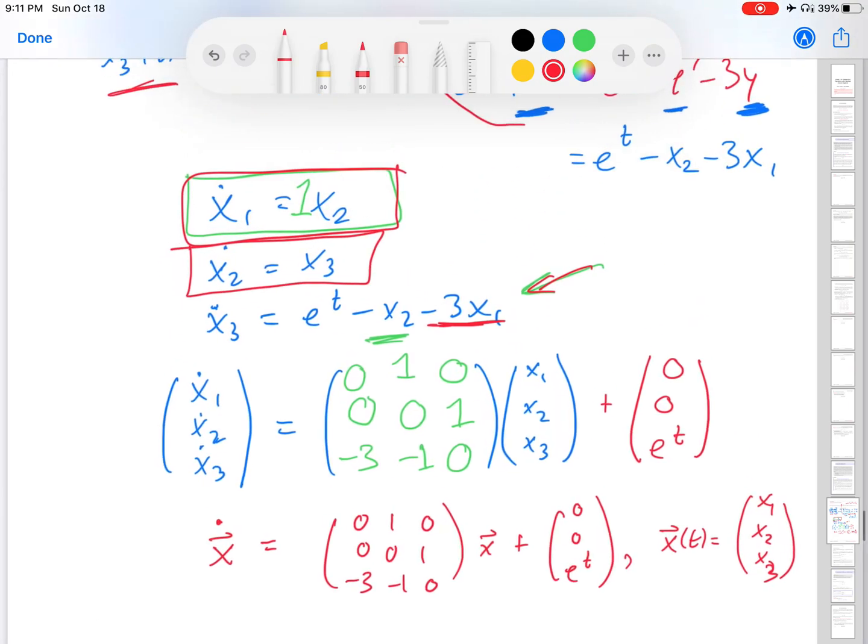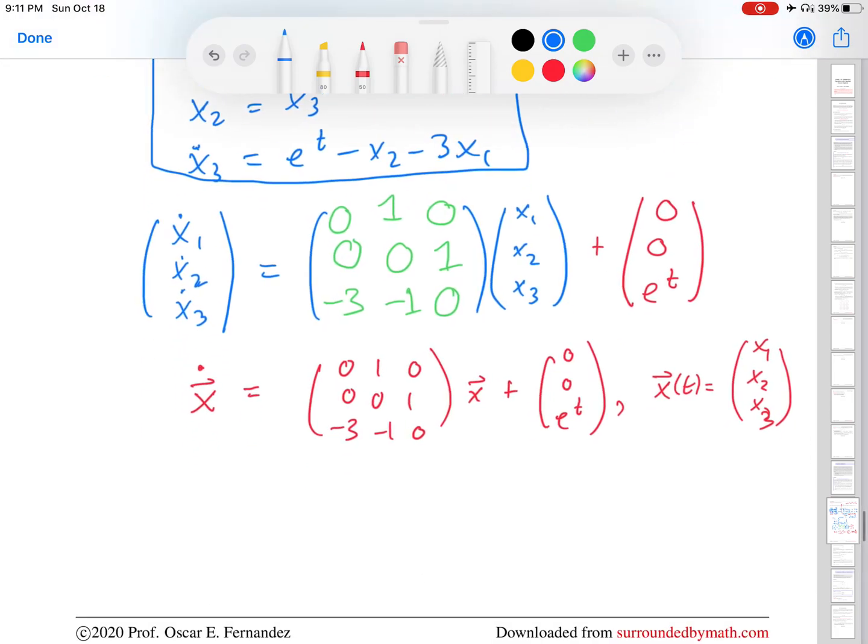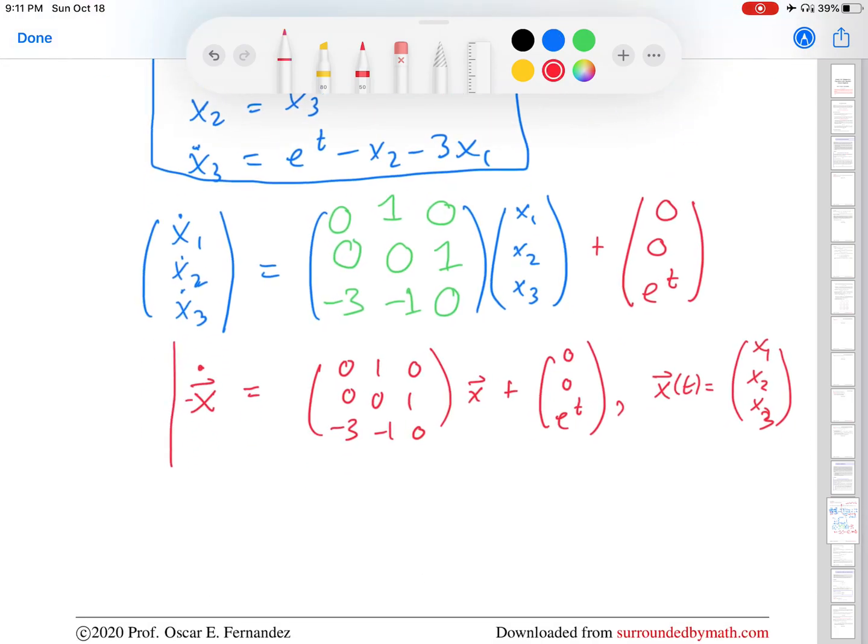Great. So then whichever representation you would like to stick with is fine for the purposes of this problem, right? This is the system of first order ODEs we wanted to derive. And this is the matrix representation of that system.